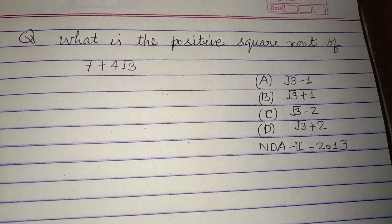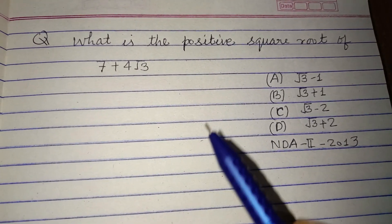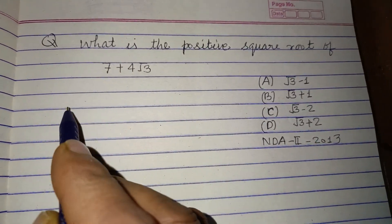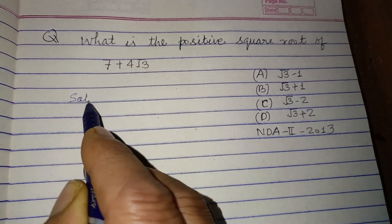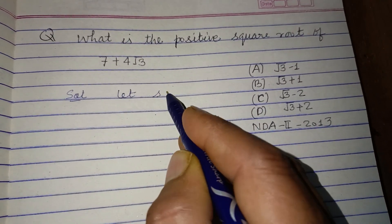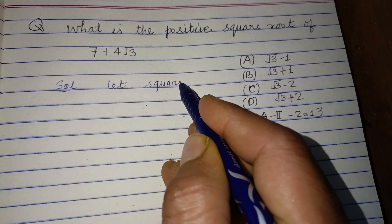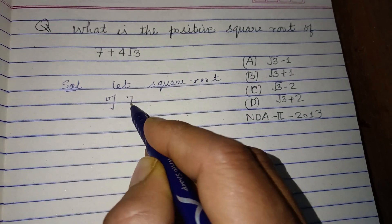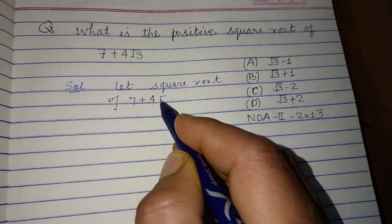Hello students, warm welcome to this YouTube channel. What is the positive square root of 7 + 4√3? Let's say the square root of 7 + 4√3 is x.